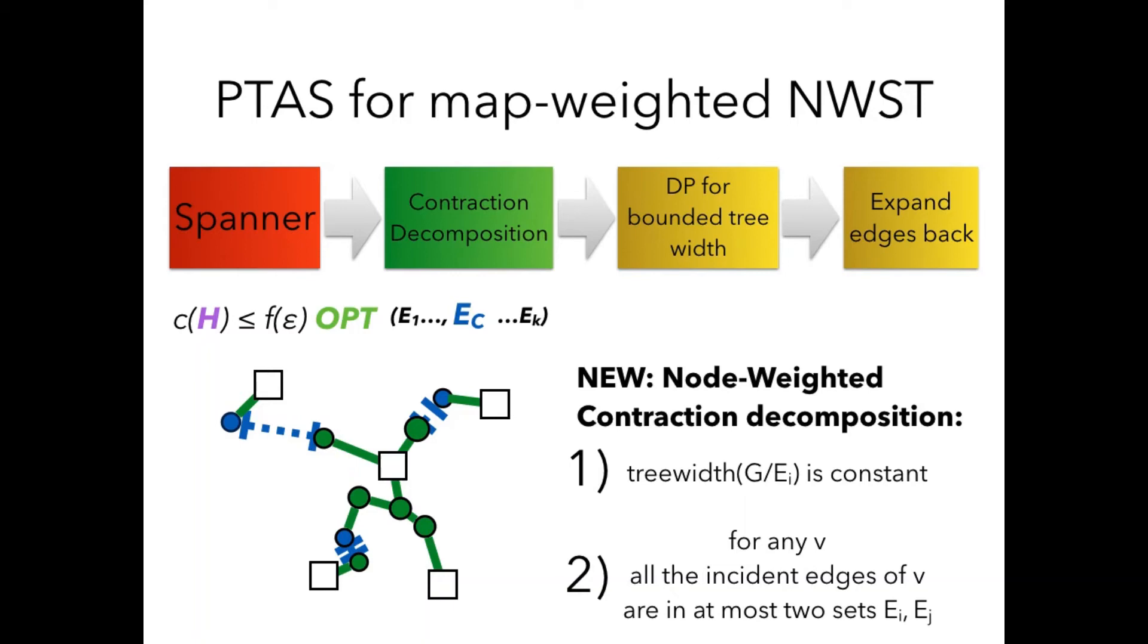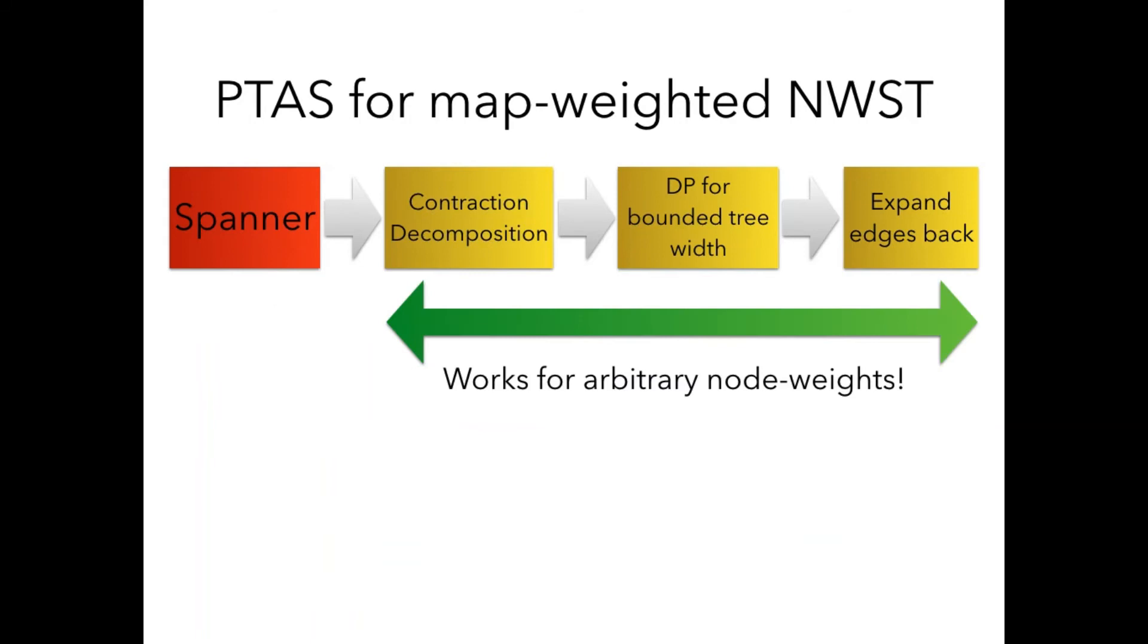Our new thing is a new node-weighted contraction decomposition. And our contraction decomposition, it has two properties. First, as before the treewidth after contraction is constant. However, also additionally, for any vertex v, all the incident edges of this vertex fall in at most two sets of this decomposition. We obtain this property and a new node-weighted contraction decomposition. And with this contraction decomposition, we are able to show all the steps of this framework and they work for arbitrary node weights. This is great. However, for spanner we couldn't derive a spanner for arbitrary node weights. We were able to do that only for map-weighted instances.